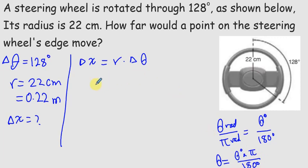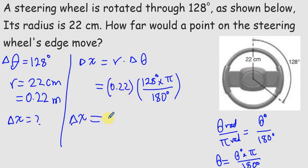So I can put delta theta as this, 128 degrees times pi divided by 180 degrees. This is times r, which is 0.22. So the distance equals 0.491 meters.